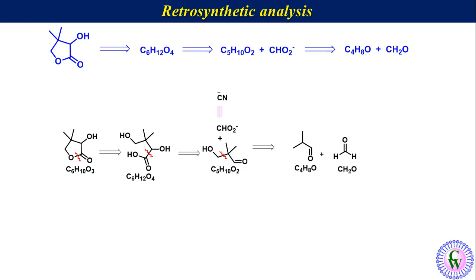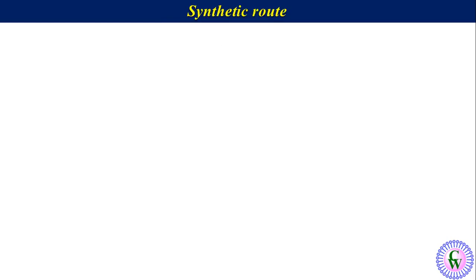Thus the synthetic route will involve condensation of isobutyraldehyde with formaldehyde in the presence of trimethylamine in methanol and water to produce 3-hydroxy-2,2-dimethylpropanal